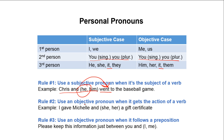Rule number two: use an objective pronoun when it gets the action of a verb. Example: 'I gave Michelle and she or her a gift certificate.' The verb is gave. Who gets the action of the verb? Michelle and one of these pronouns. Whenever the pronoun gets the action of the verb, it has to be objective. So we use 'her.' 'I gave Michelle and her a gift certificate.'